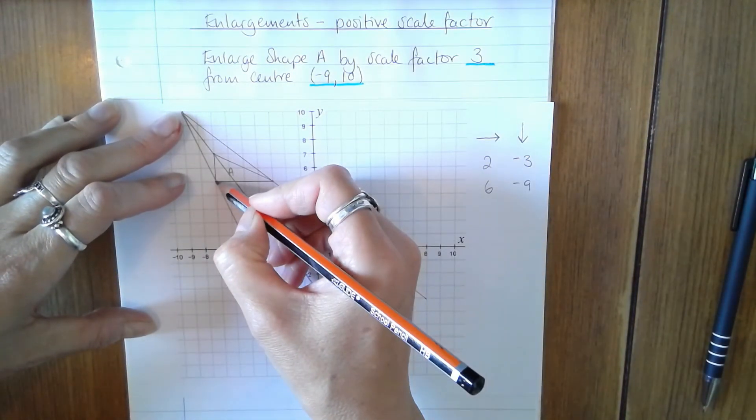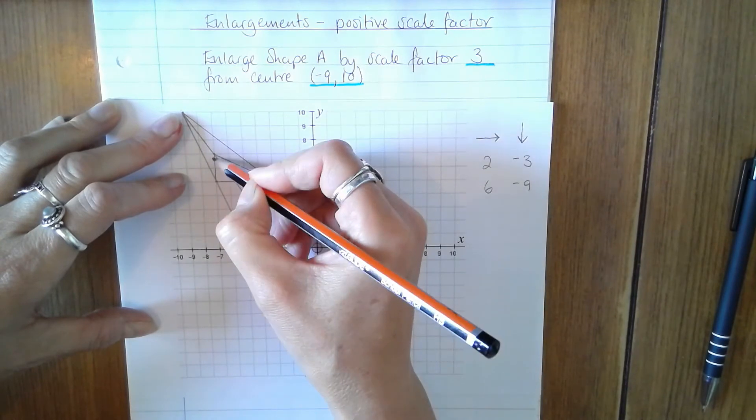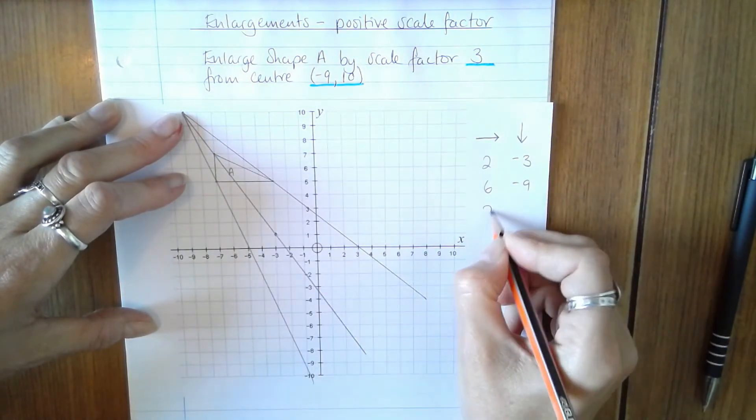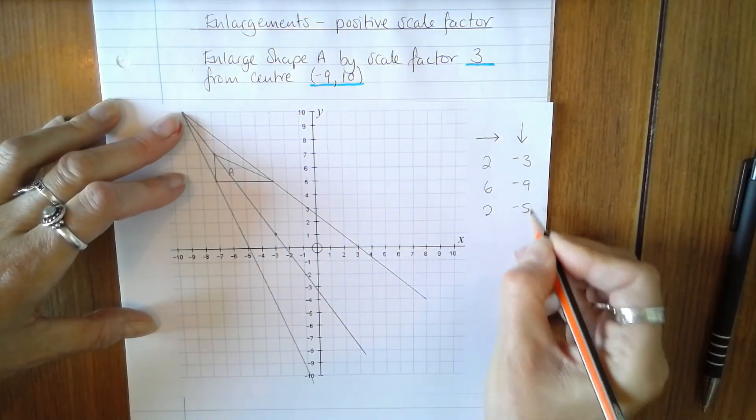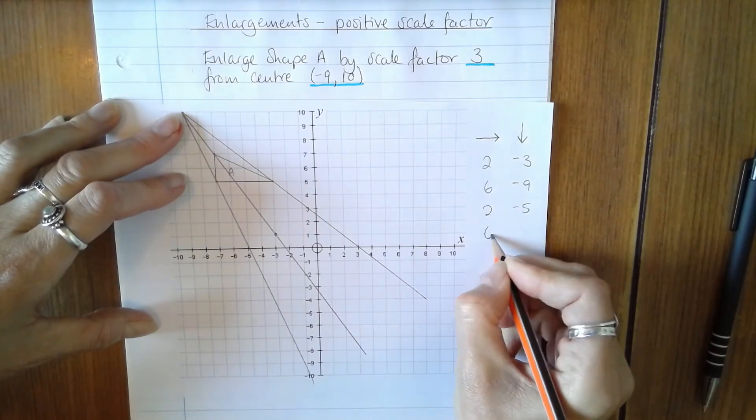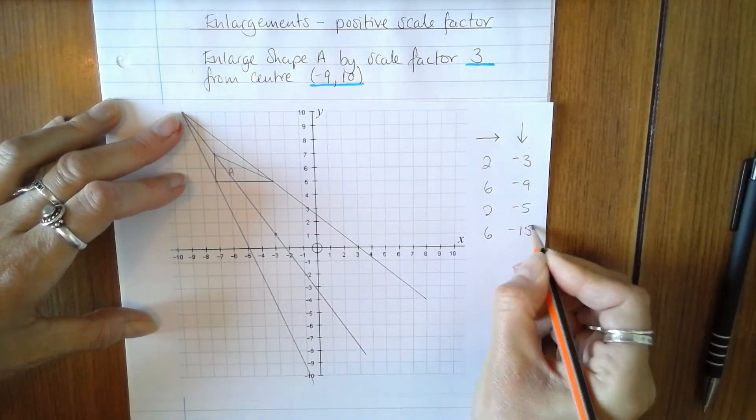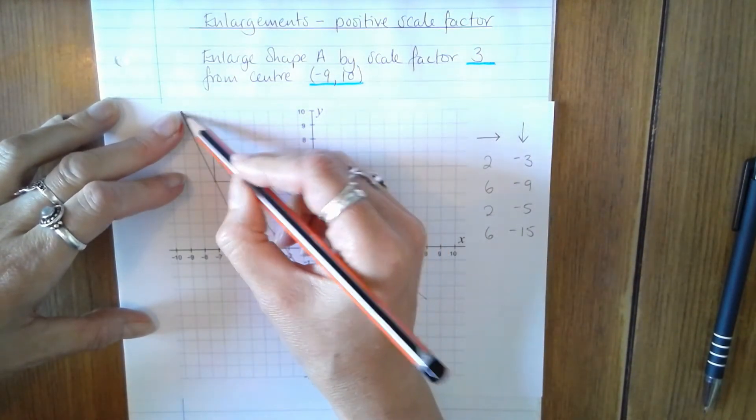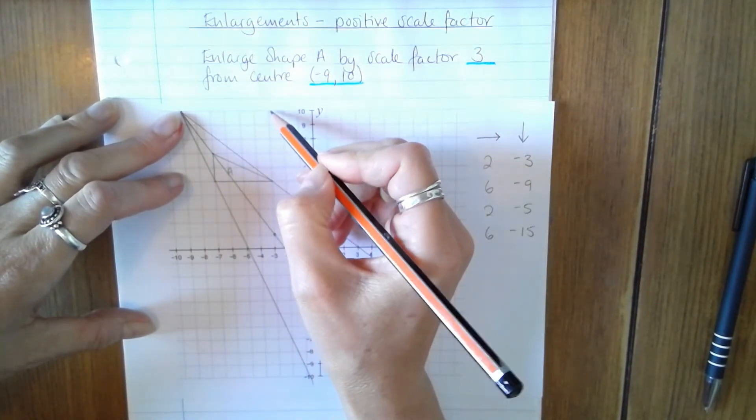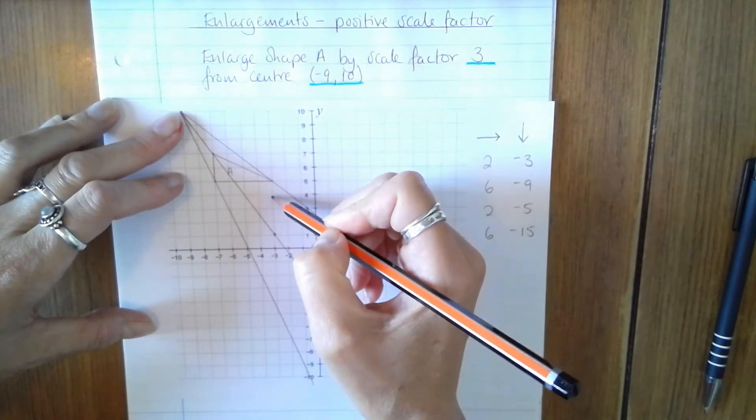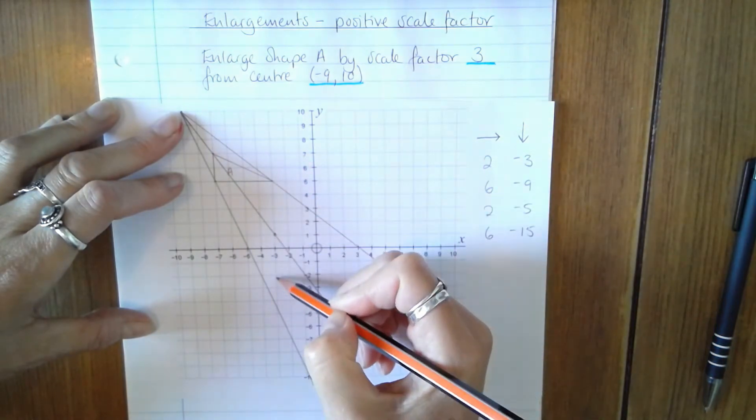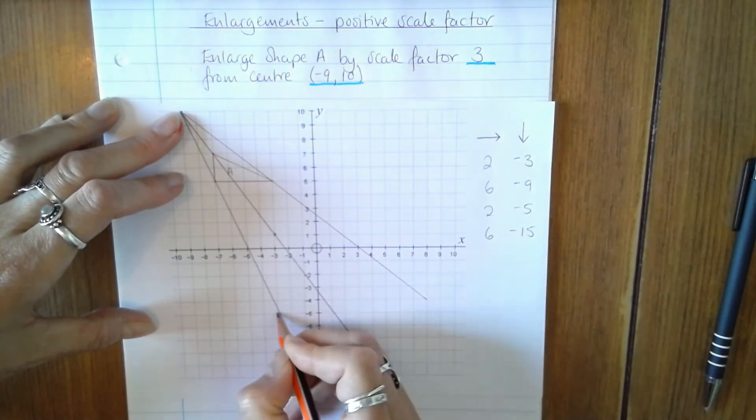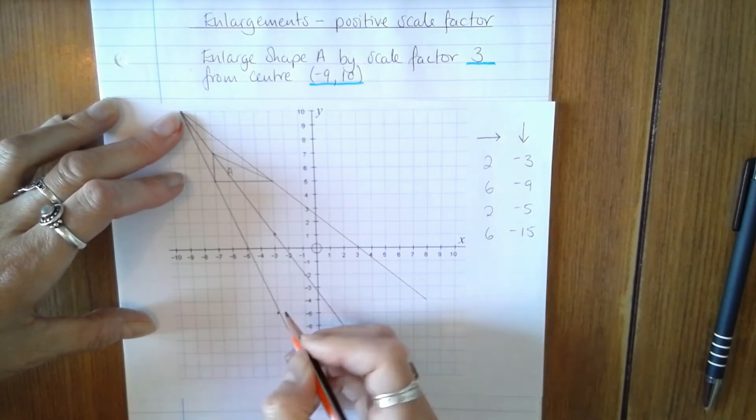The next vertex here is two across and five down, two negative five. Multiply by three, six negative fifteen. Six across and 15 down, and six across and three, six, nine, twelve, fifteen, very close to the grid line, which is fine.